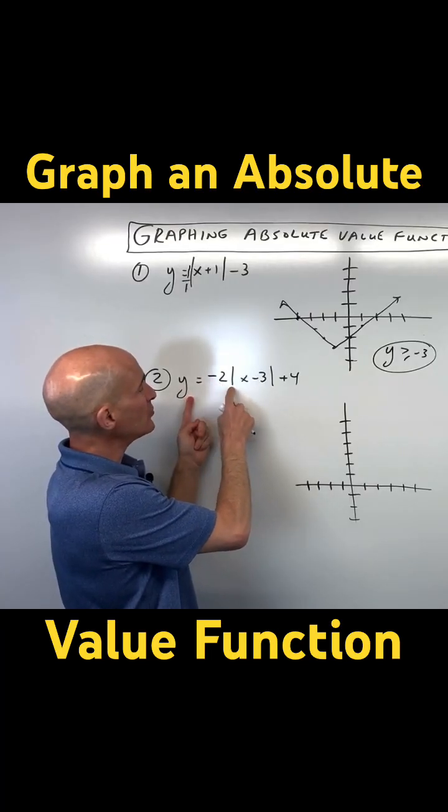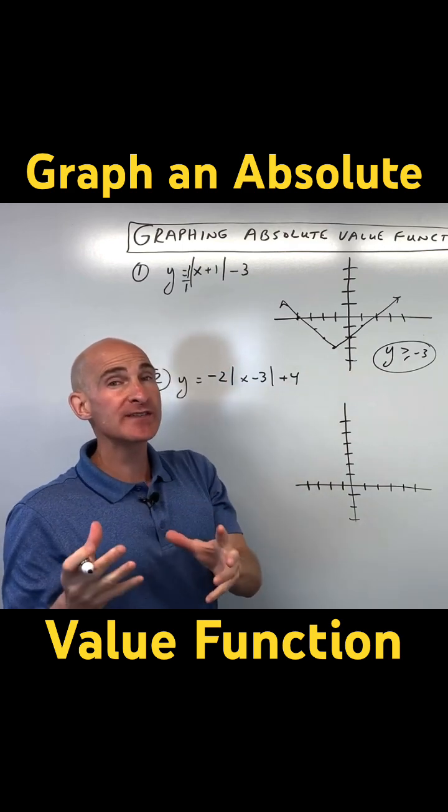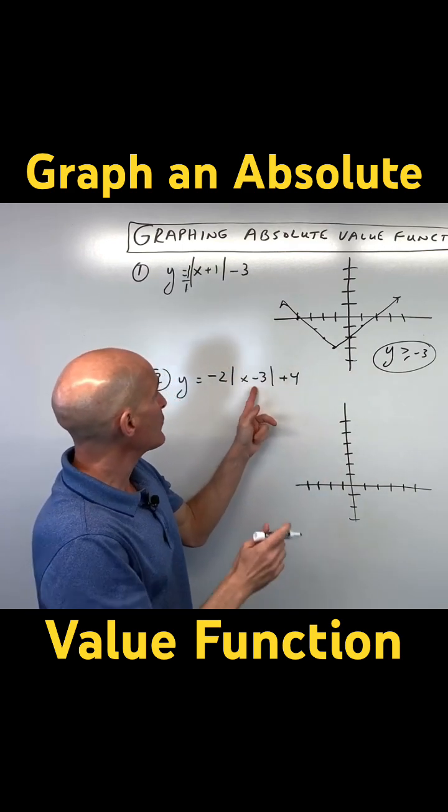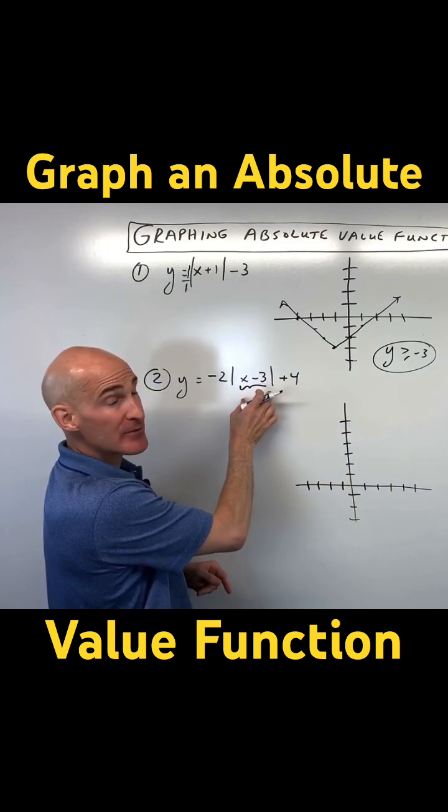It says y equals negative 2 times the absolute value of x minus 3 plus 4. So where is that vertex? Well, remember, this one here in the parentheses, in the absolute value bars I should say, has the opposite effect.